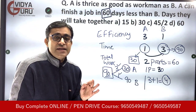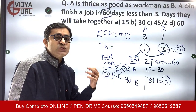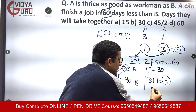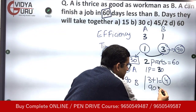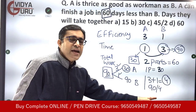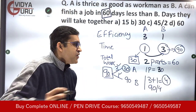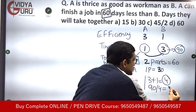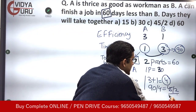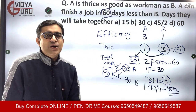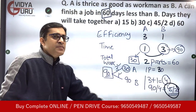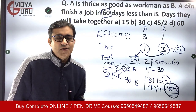To calculate the total time taken: the total work is 90 units and together they perform 4 units per day. So the time taken is 90 divided by 4, which equals 45 by 2 — that is 22 and a half days. That's our answer: the total time they will take when working together is 22.5 days.